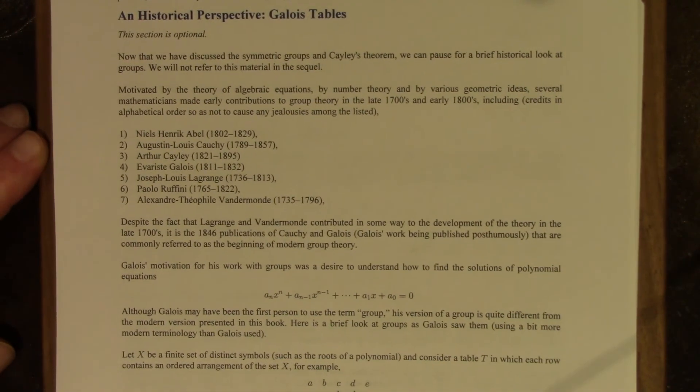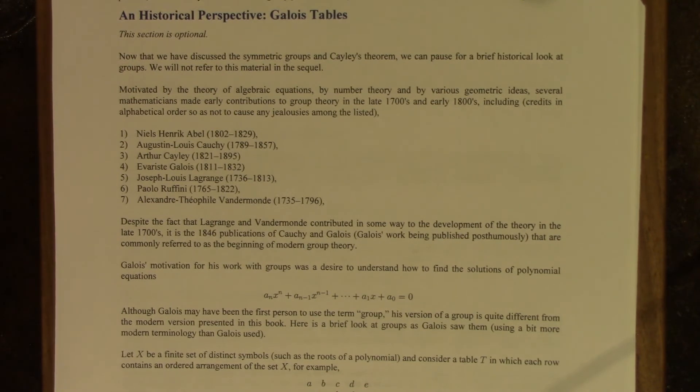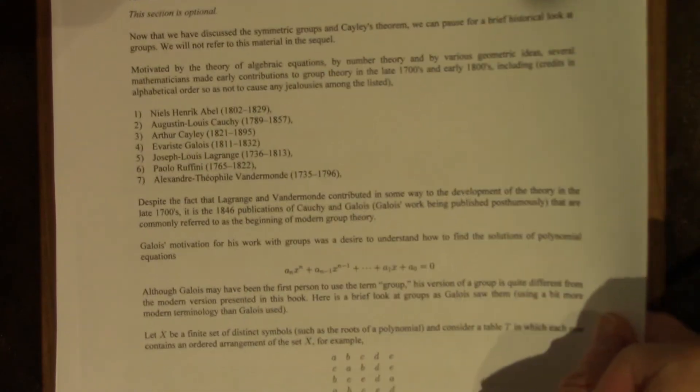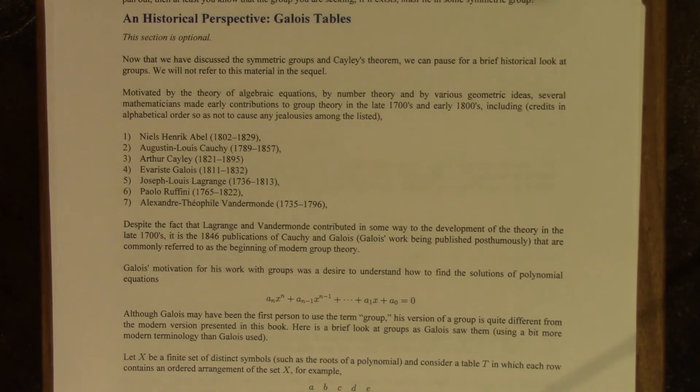So now I want to, before we conclude on symmetric groups and go on to free groups, I want to talk just very briefly about how Galois viewed groups. We won't be using this material subsequently, so if you're not interested, you can skip ahead, but it's only a page and a half or so, it's not a lot. Motivated, as Galois was, and others, by the theory of algebraic equations, Galois was interested in solutions to algebraic equations, also by number theory, by various geometric ideas, as others were. Several mathematicians made early contributions to group theory in the late 1700s and the early 1800s. Group theory sort of blossomed.